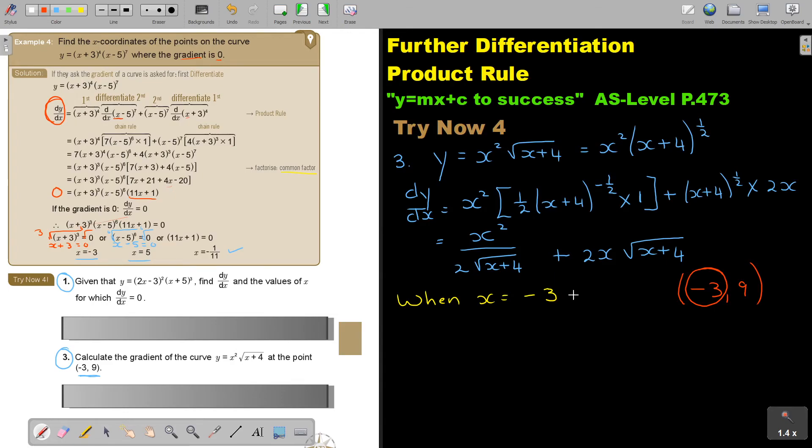So basically, when, then dy over dx is equal to negative 3 over 2, negative 3 plus 4, plus 2 negative 3, negative 3 plus 4.